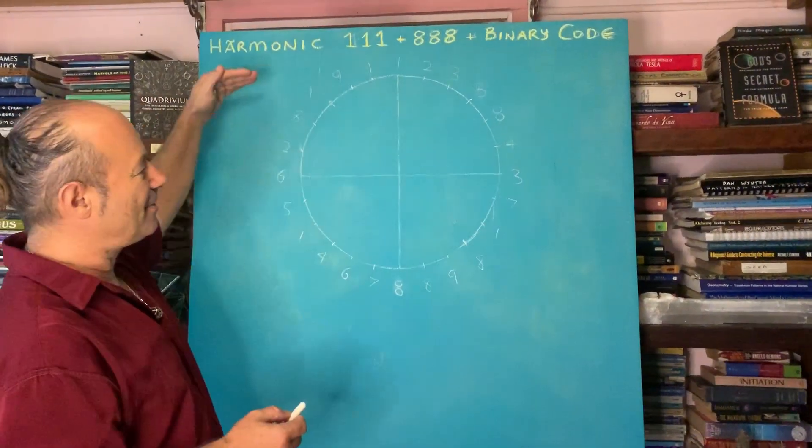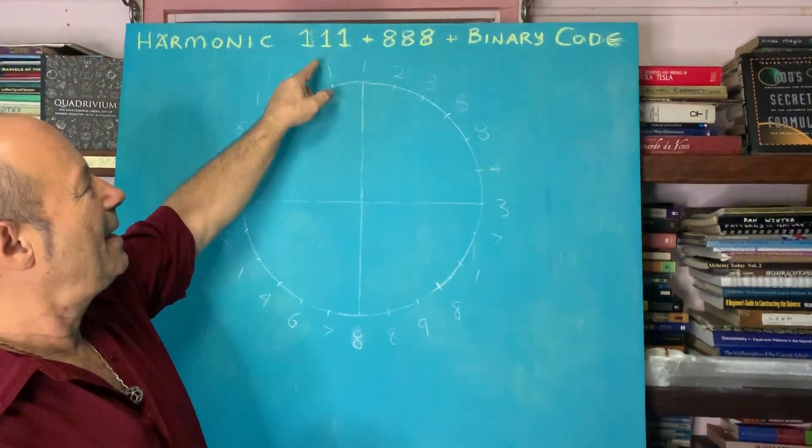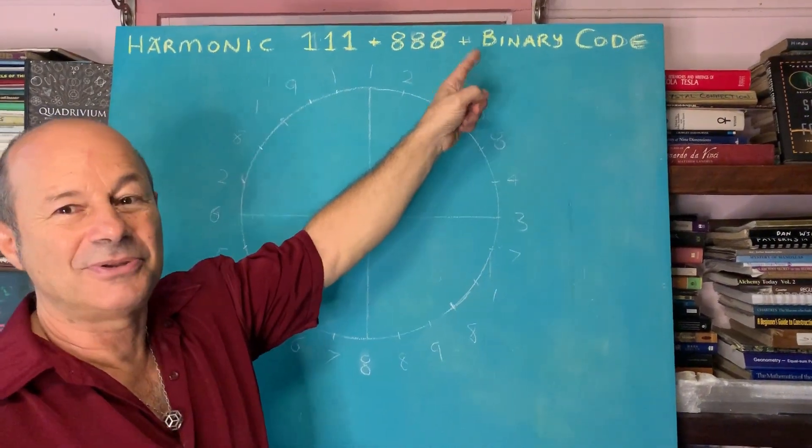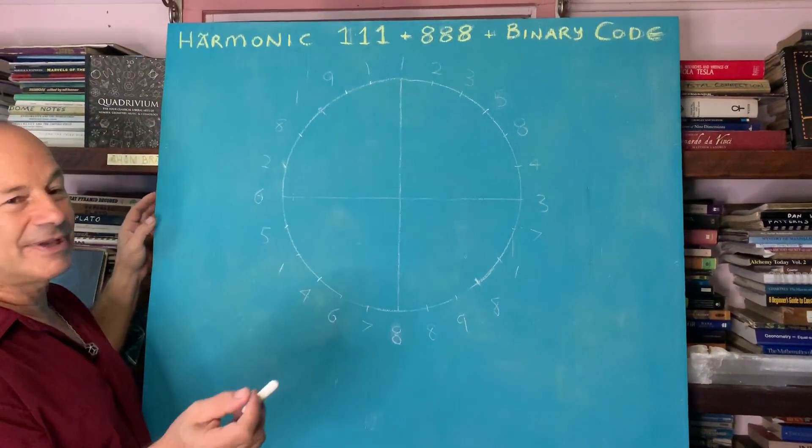The title of this lecture is Harmonic 111 and Harmonic 888, and its connection to the binary code. So first of all, let's start off with a circle.